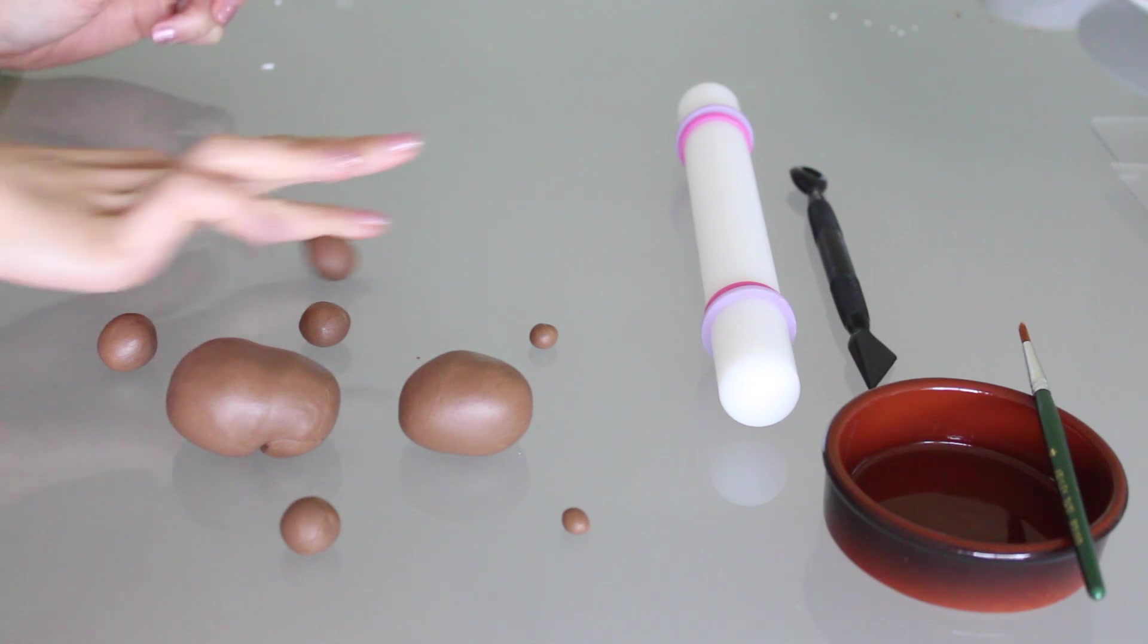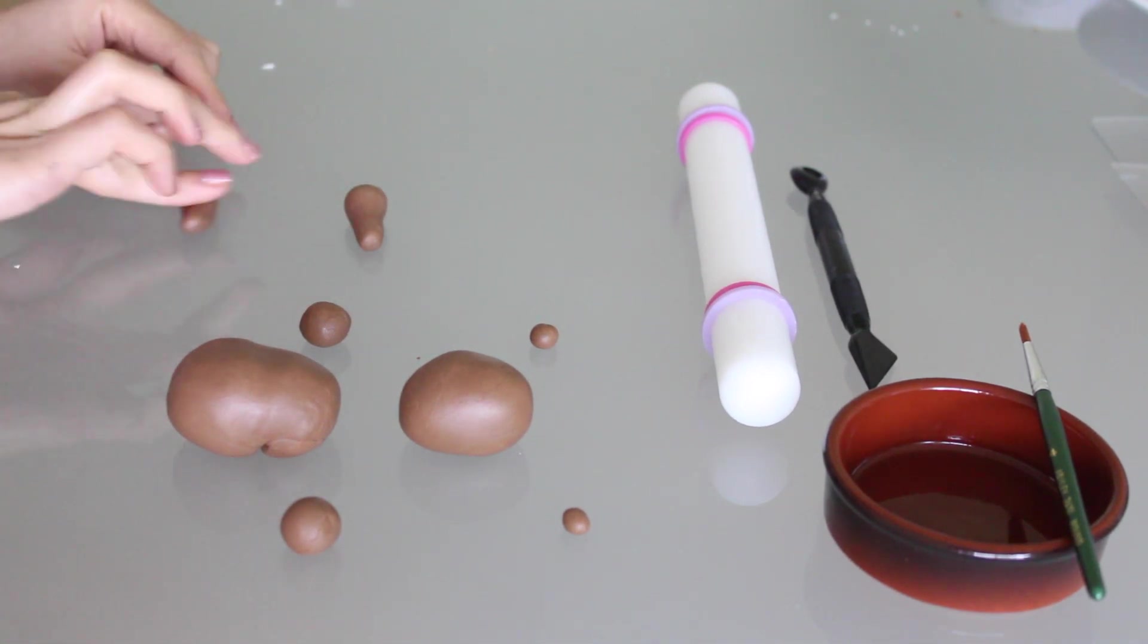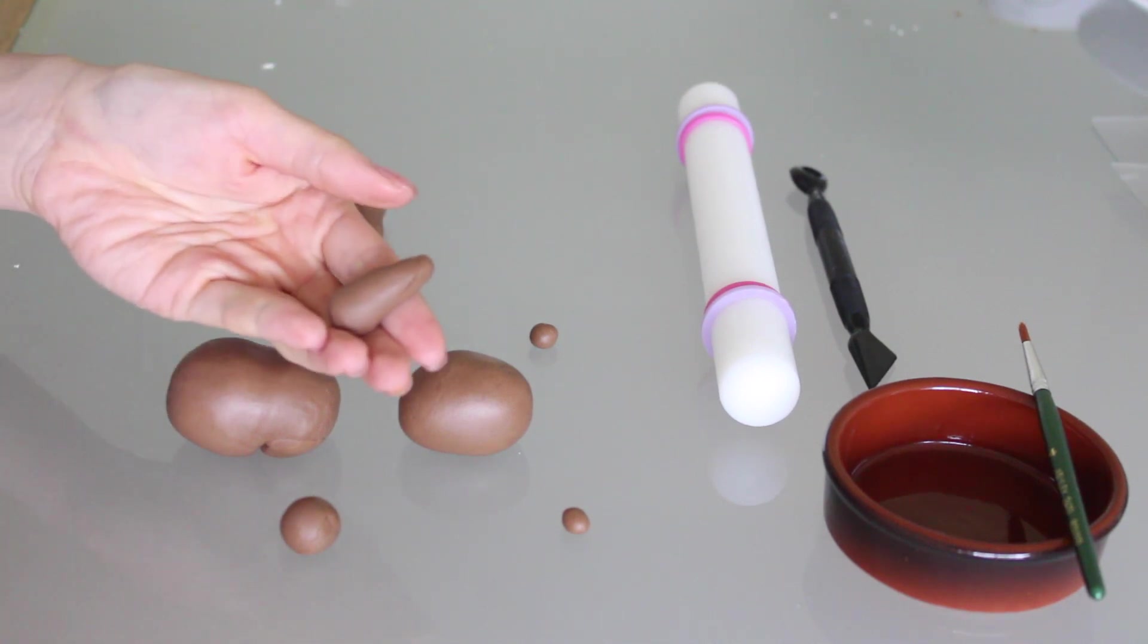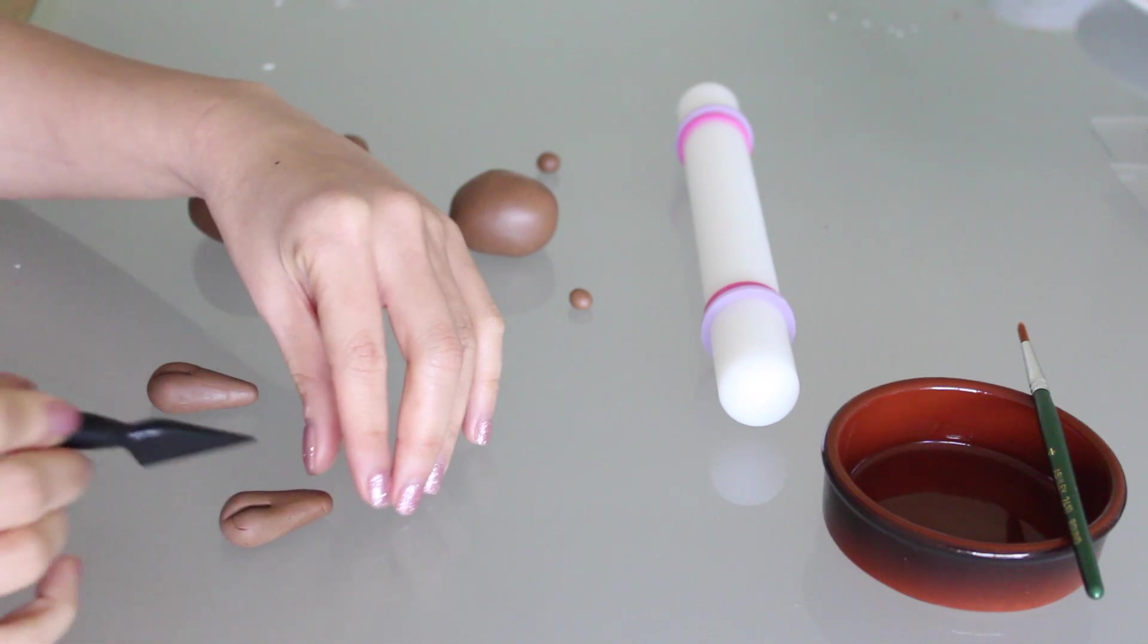Next, starting with the legs, roll each ball into a cone like so. Then use a fondant knife to create the hoof.